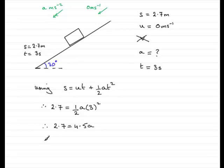And divide both sides by 4.5 to give us A. So A is going to be 2.7 divided by 4.5. If you do that on a calculator, you'll find that A turns out to be 0.6. And the units will be metres per second per second. So there's our acceleration.